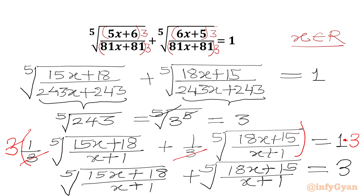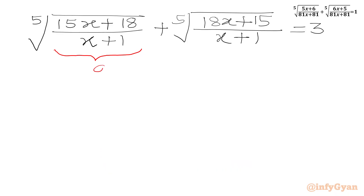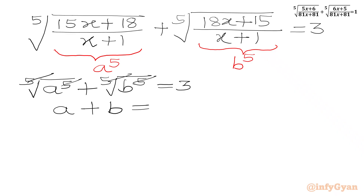Now we have to solve this equation. We will use substitutions. Let us say the radicand (15x+18)/(x+1) equals a^5 and (18x+15)/(x+1) equals b^5. So we can write our first equation as fifth root of a^5 plus fifth root of b^5 equal to 3. Since fifth root and power 5 cancel, we get equation number 1: a plus b equal to 3.